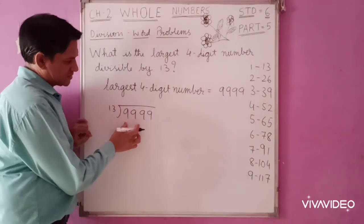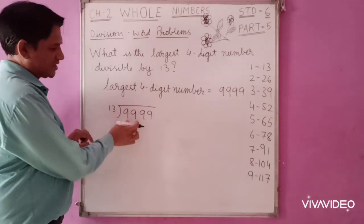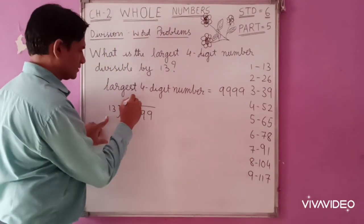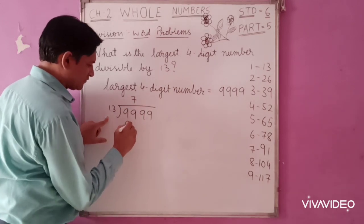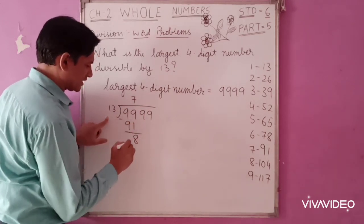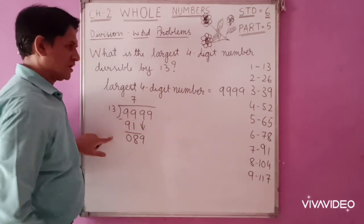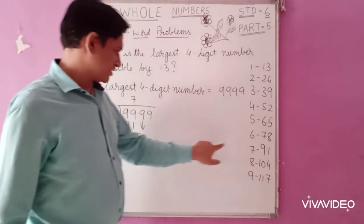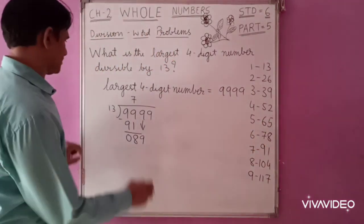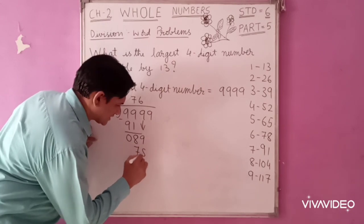Now, looking at the first two digits: 9 is not possible, so we go for 99. 13 times 7 is 91. When you subtract, you get 8, carry down 9 to get 89. Here it is 6 times 78, so 6 times 13 is 78.